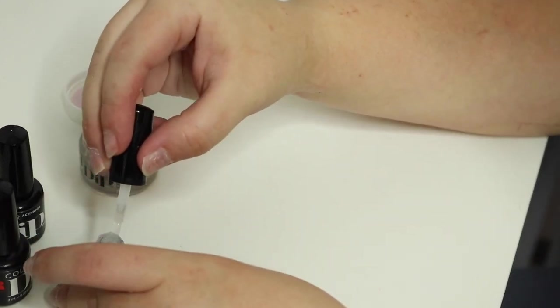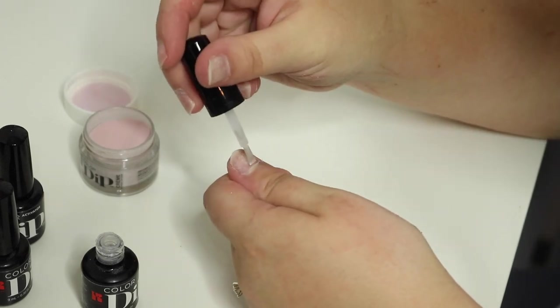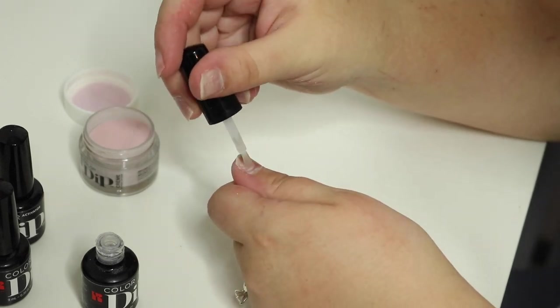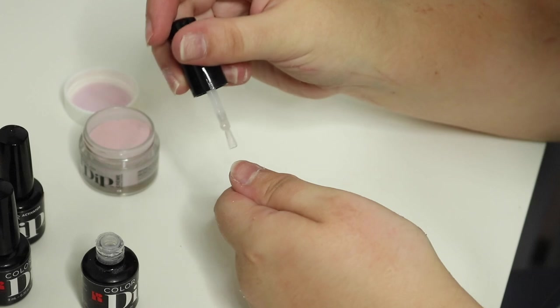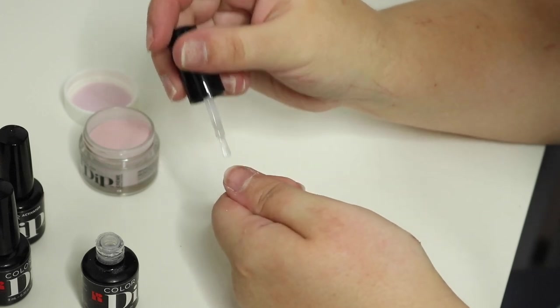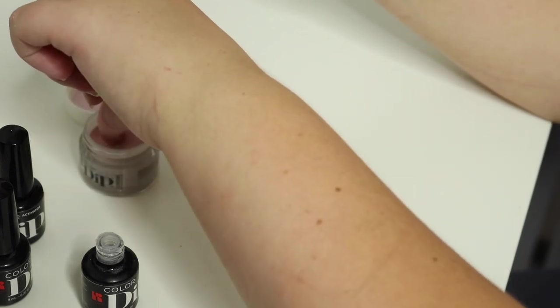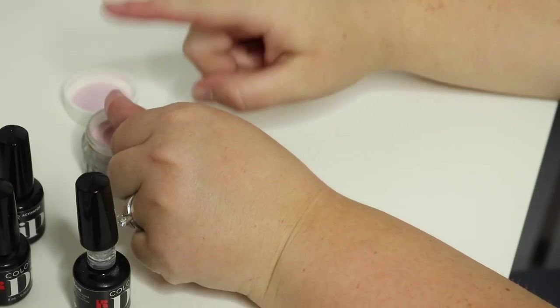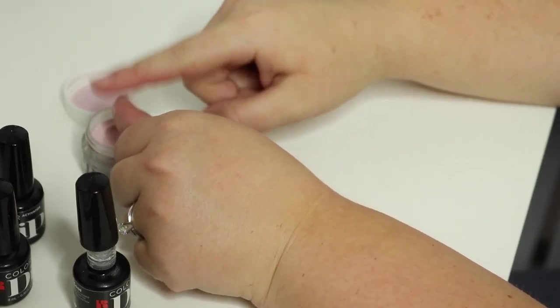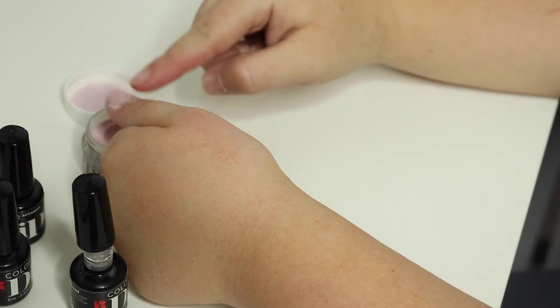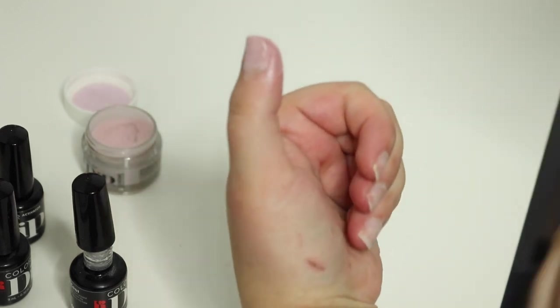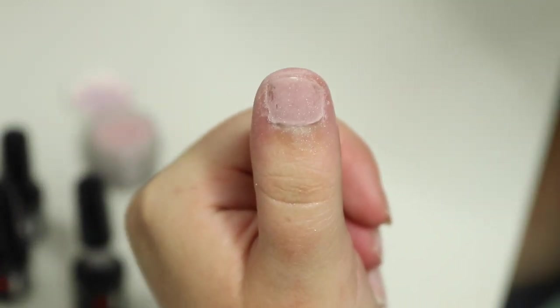And it says that you kind of want to work fast, but you just want to do an even layer. Try not to get it on your skin. Then dip it at a 45 degree angle and then tap off the excess, or kind of brush it off too, just to make sure it's all off. And then, so that is one layer.